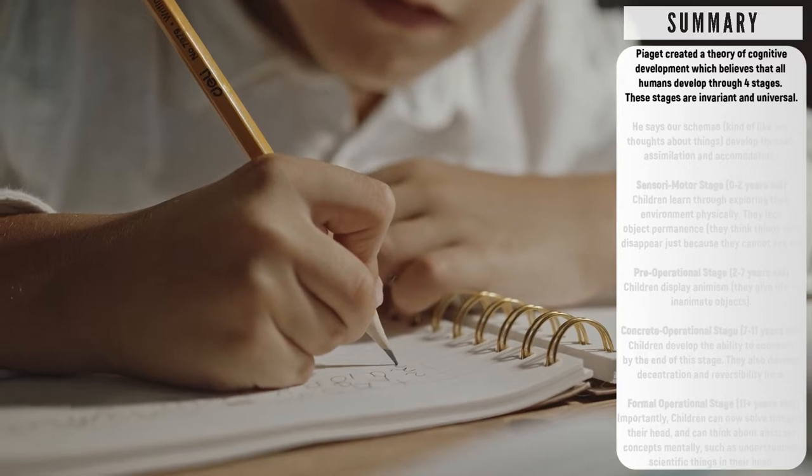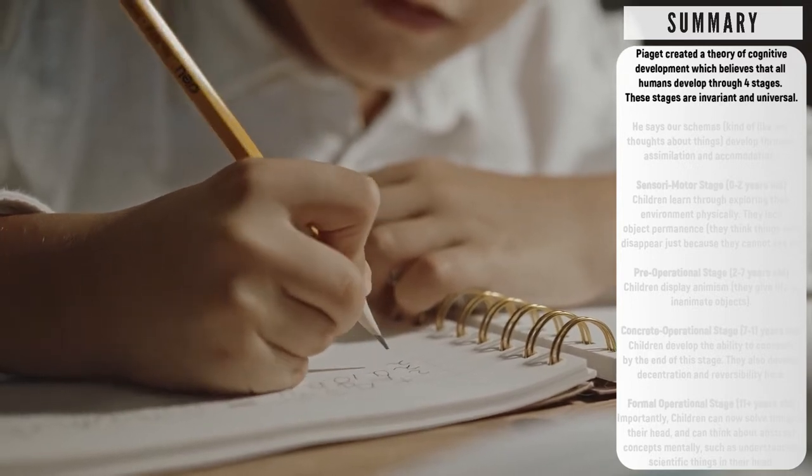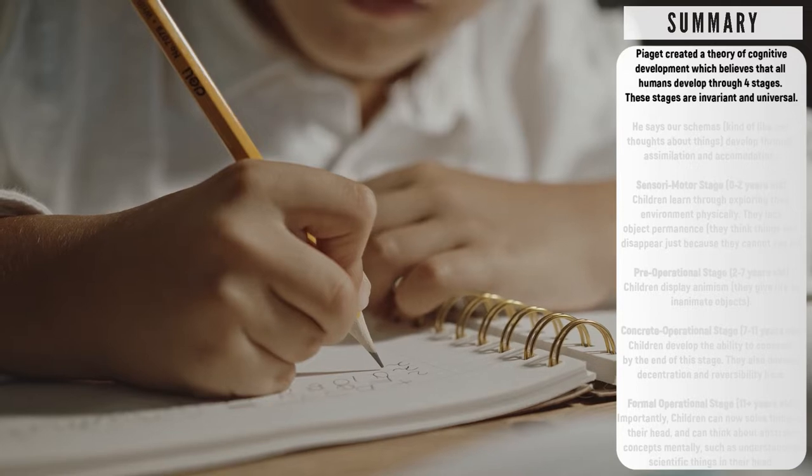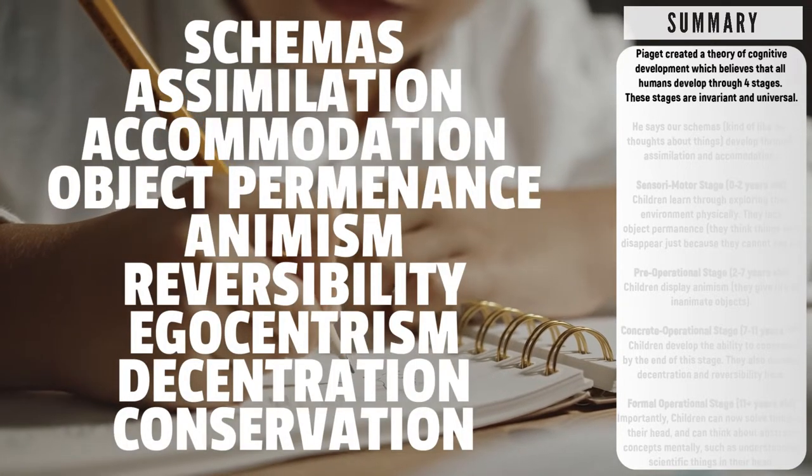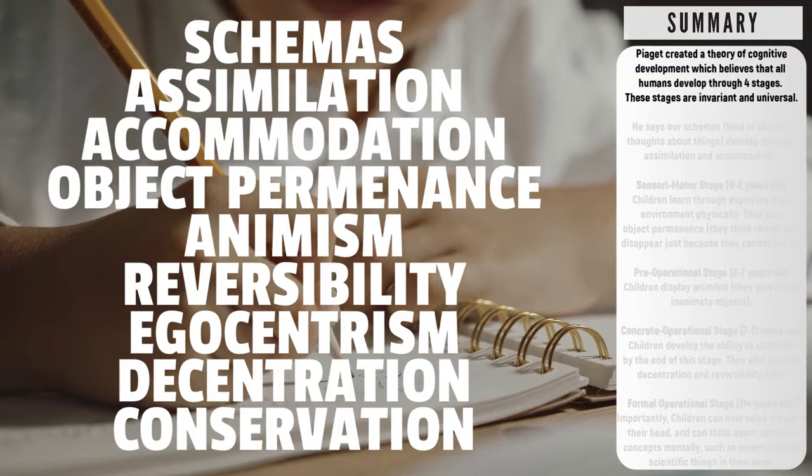No matter their background, every child goes through the same four stages of development as they grow up. Just like with theories like social learning theory, the most important thing about Piaget is the key terms, and there are tons to learn.